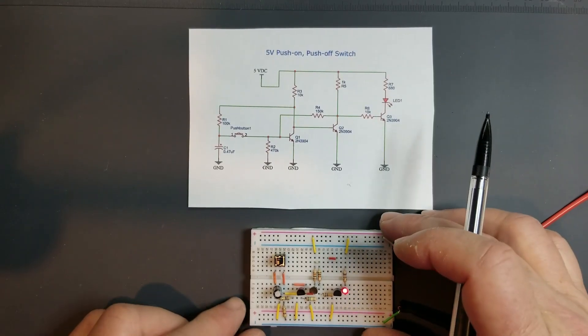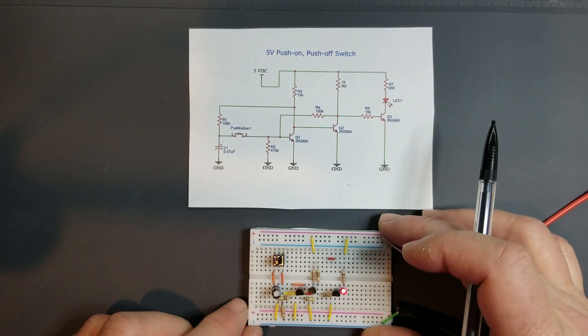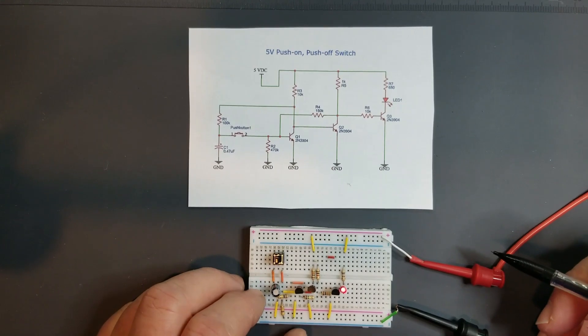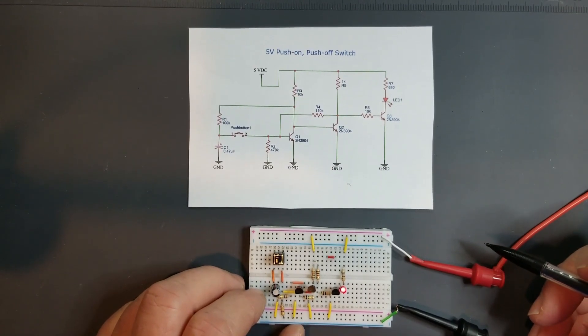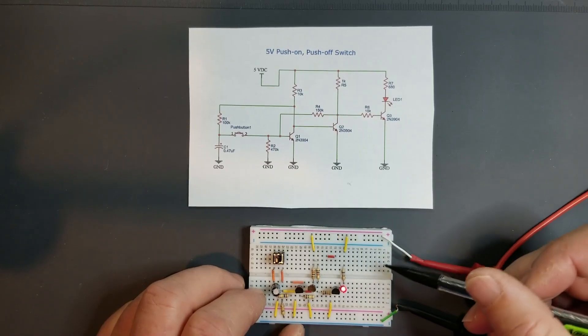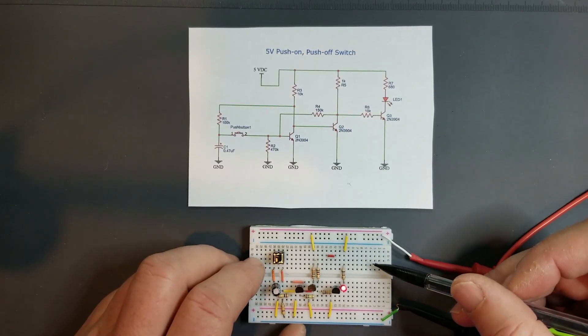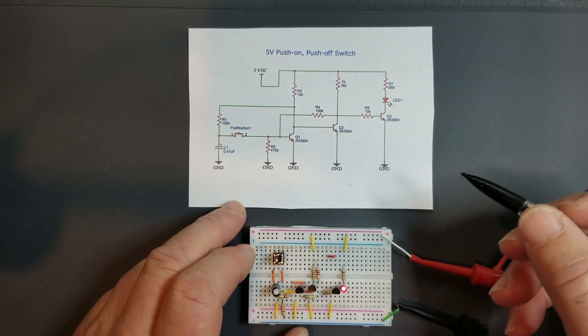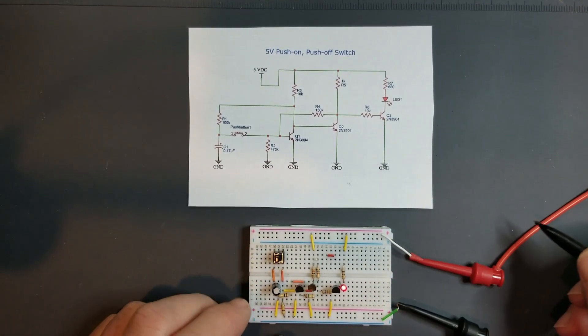Hey, this is Steve Morrison and this video is about how to build a 5 volt USB powered version of the push-on push-off soft latch circuit that was described in a previous video, video number 18.